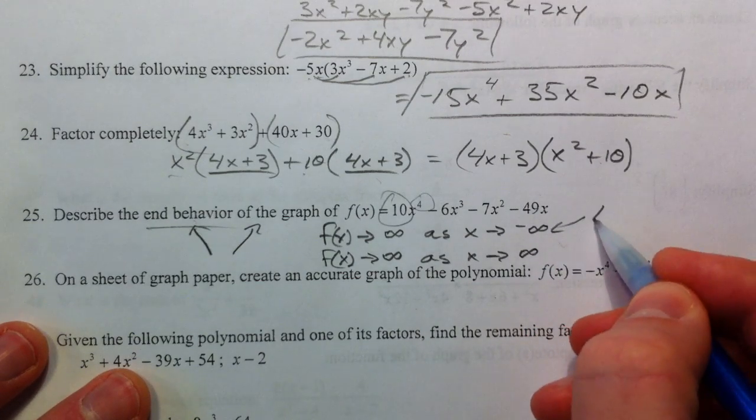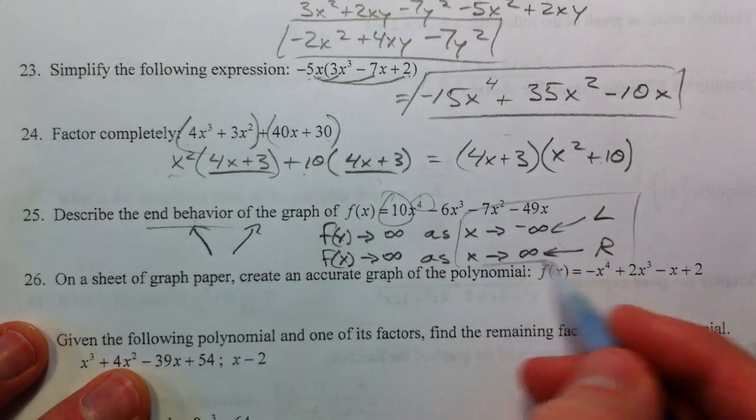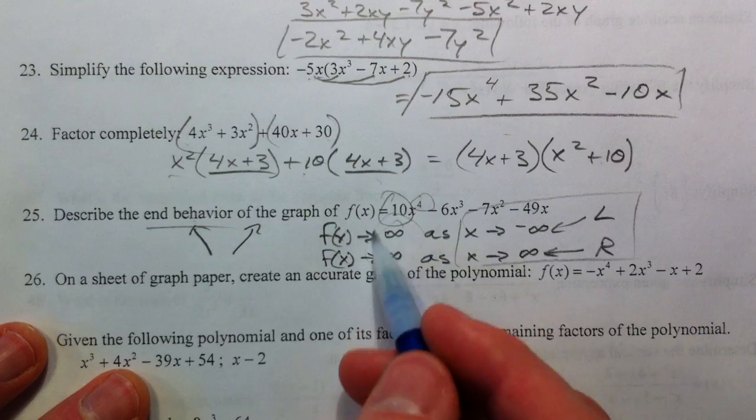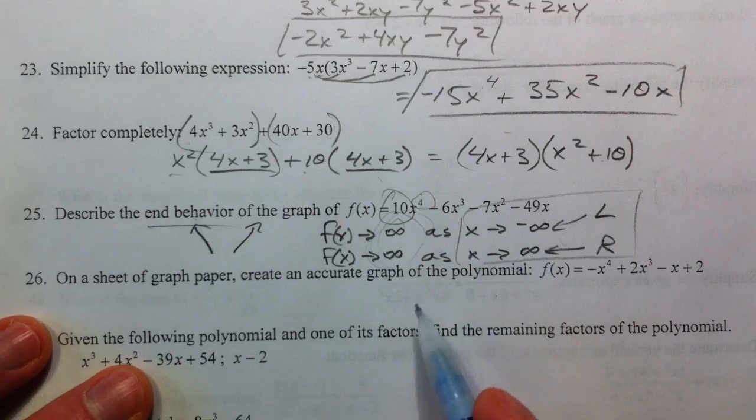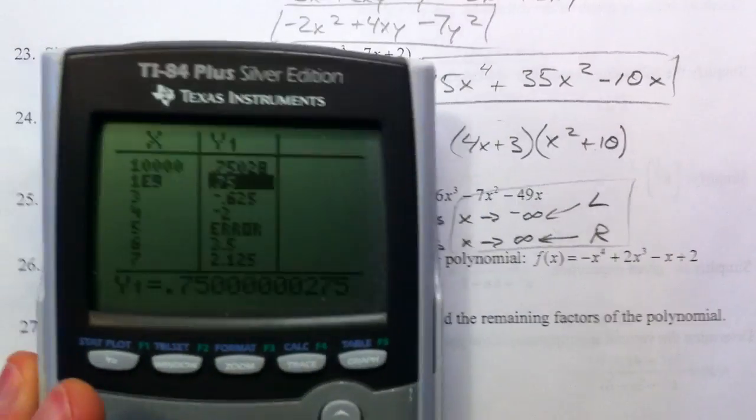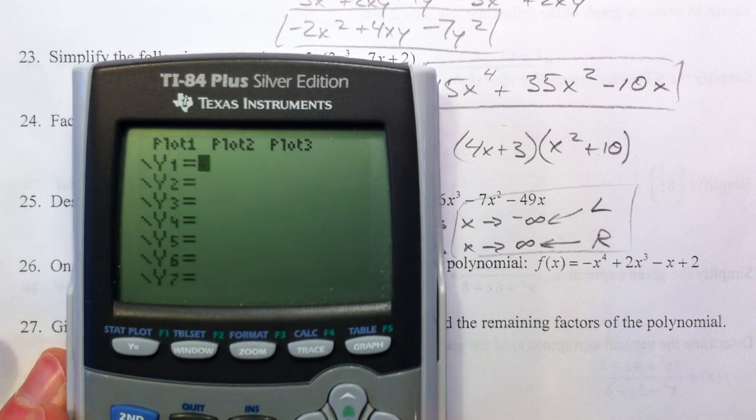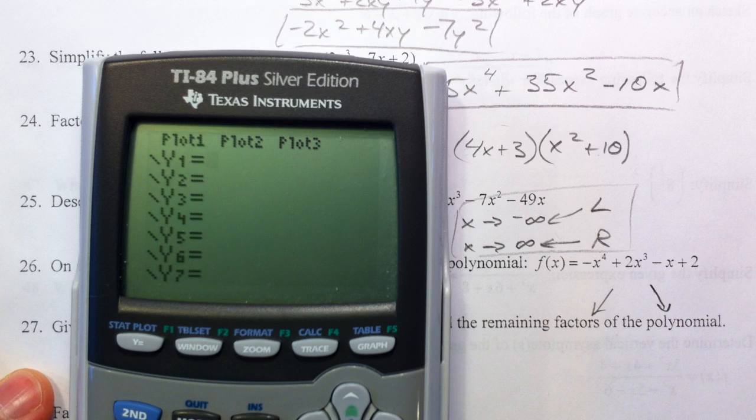And f of x goes to positive infinity as x goes to positive infinity as x goes to the right. So this is the left, this is the right. This will always be the same. And these are the only two values that are going to change in general. On a sheet of graph paper, create an accurate graph of this. Really, for this one, you should know that it's going to go down to the left and down to the right, opposite of what the last one did.